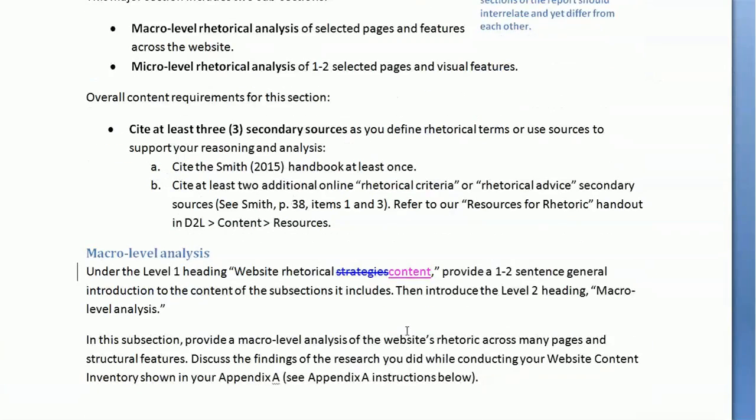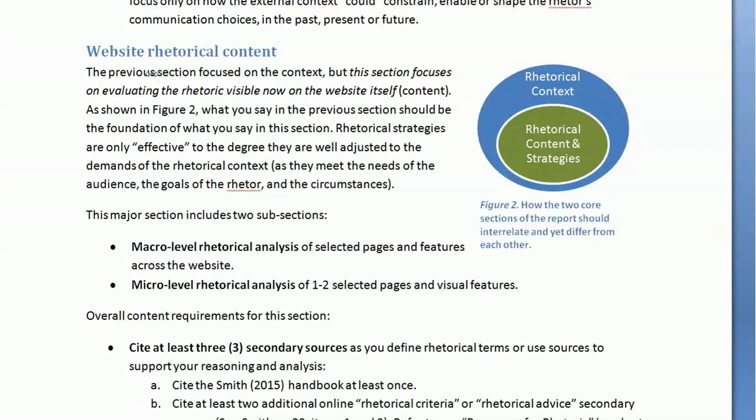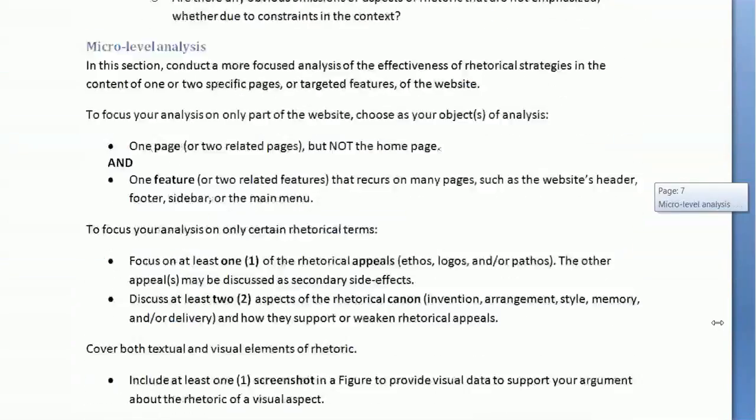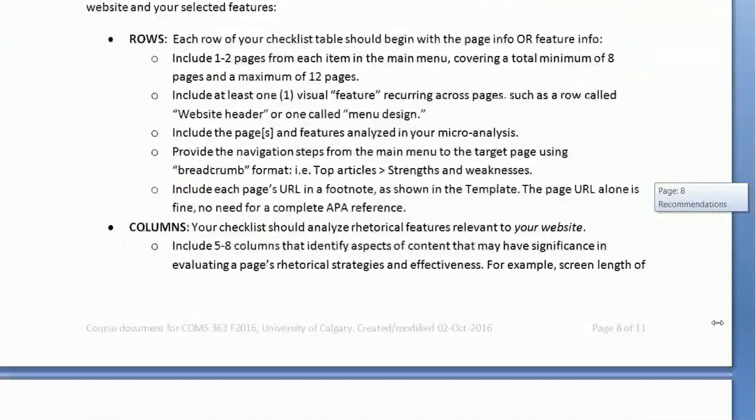Let's go back to these assignment guidelines for the content. I just wanted to show you that I made a mistake. This heading is called website rhetorical content. If I just scroll up, right? So these are the assigned headings you need to use. And I put in the wrong word. Oops. My bad. Under that heading, you put at least one or two sentences that refer to the table, and you have a summary. So it tells you to go to the inventory shown in your appendix A, and it also says see appendix A instructions below. So in order to do this section, we need to skim down to the part of the report that's the appendix. Let's go to the instructions for the appendix.